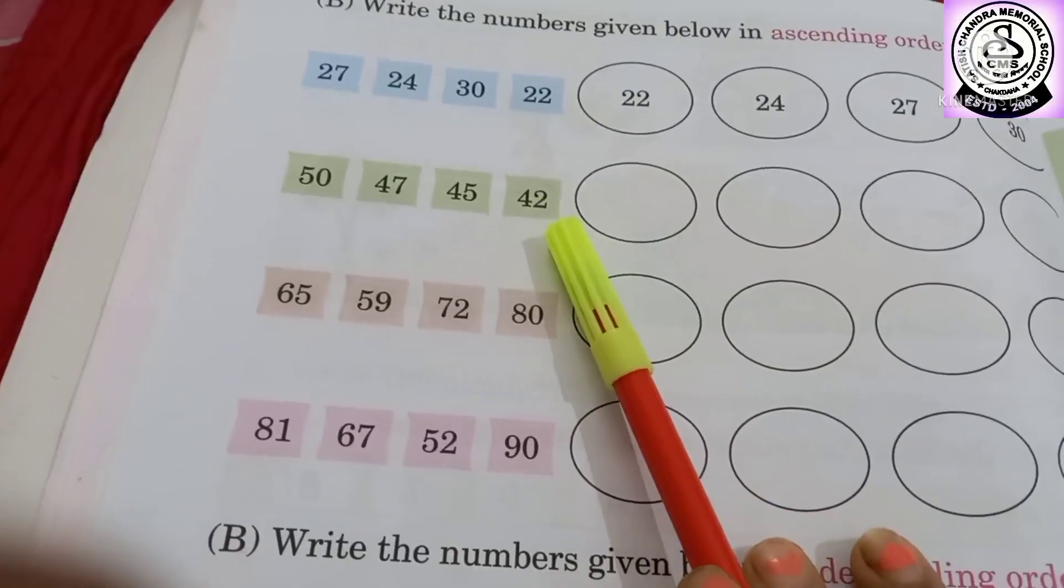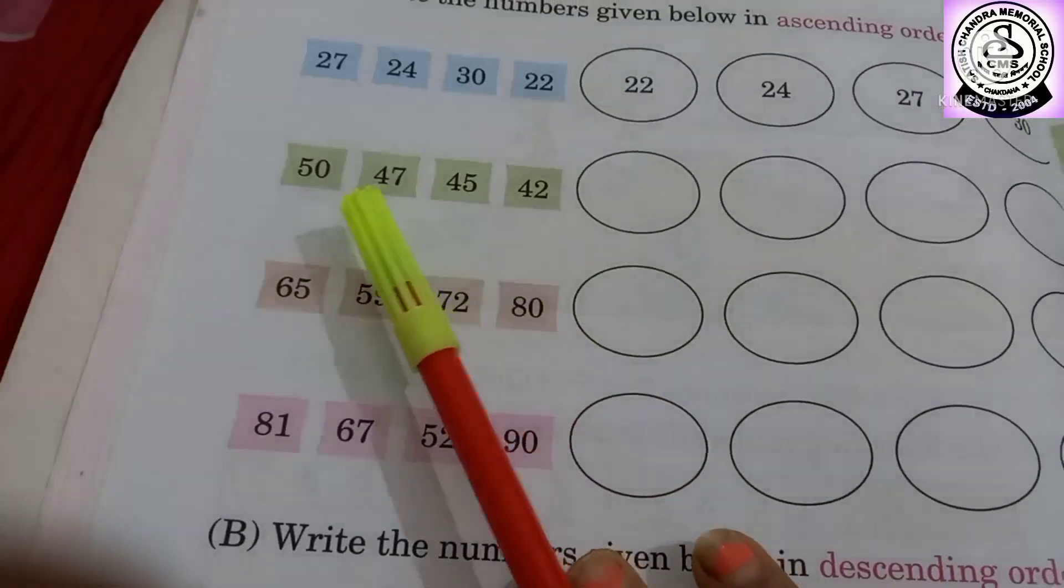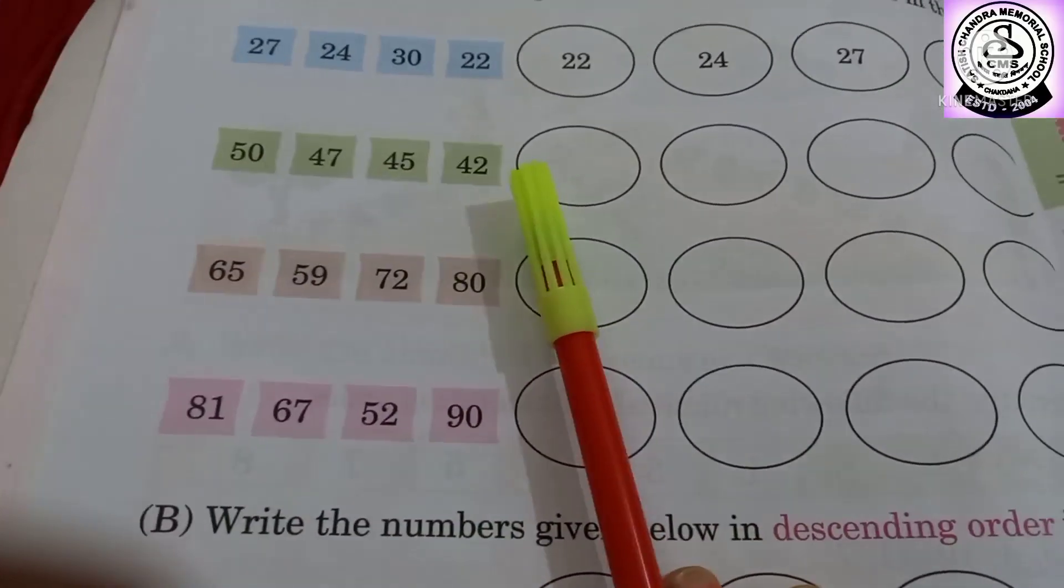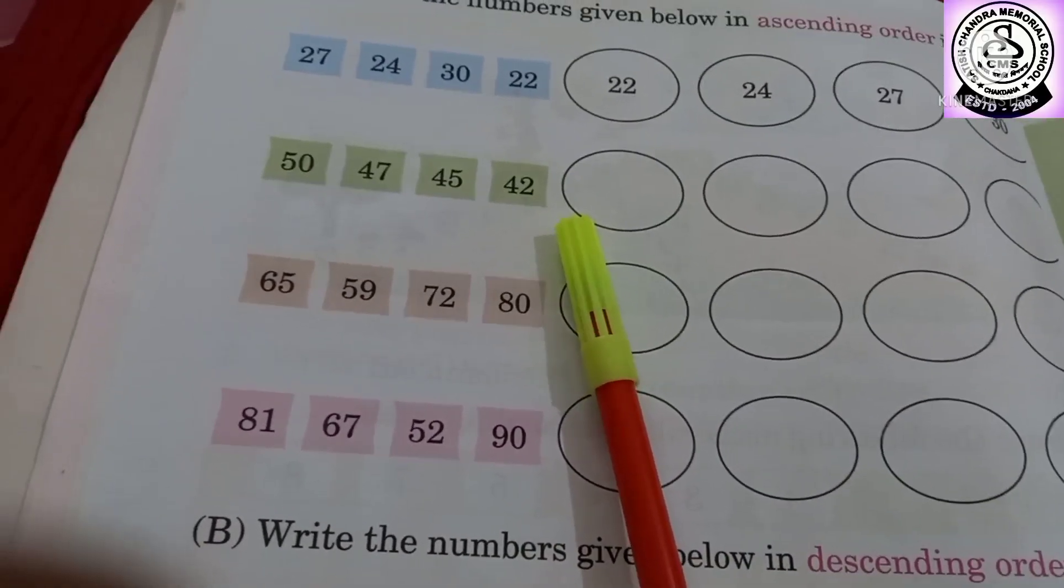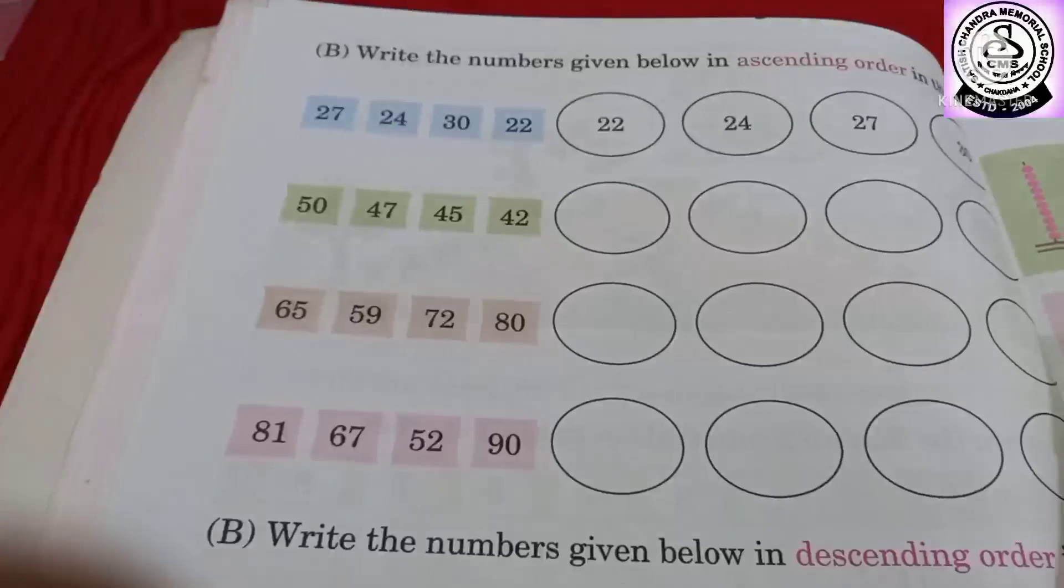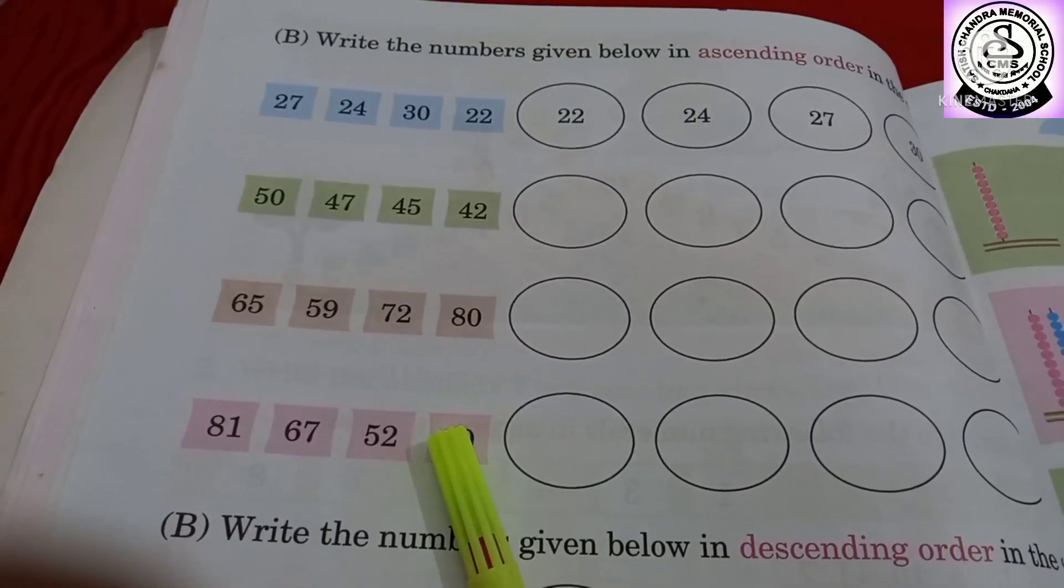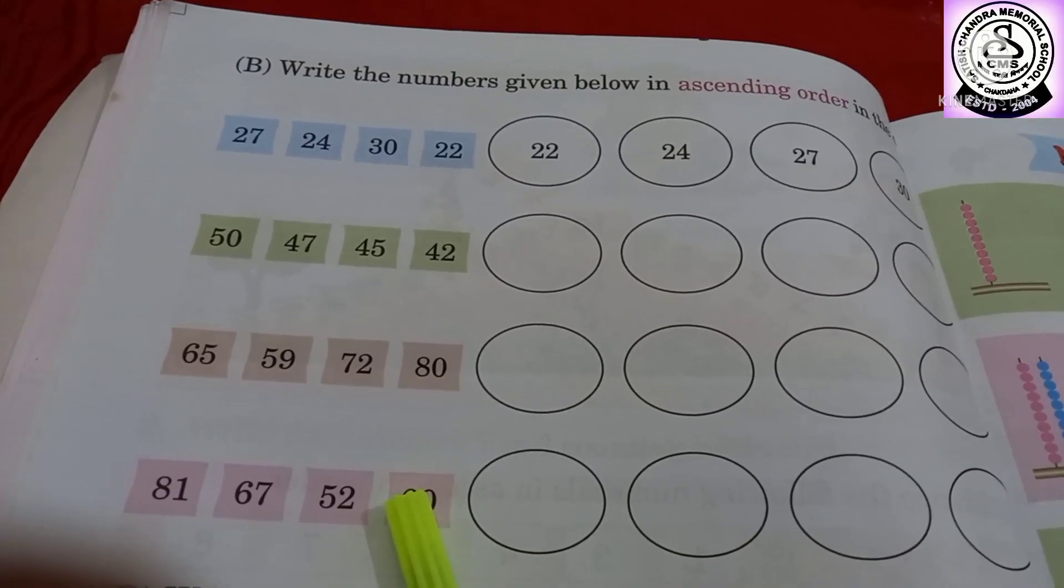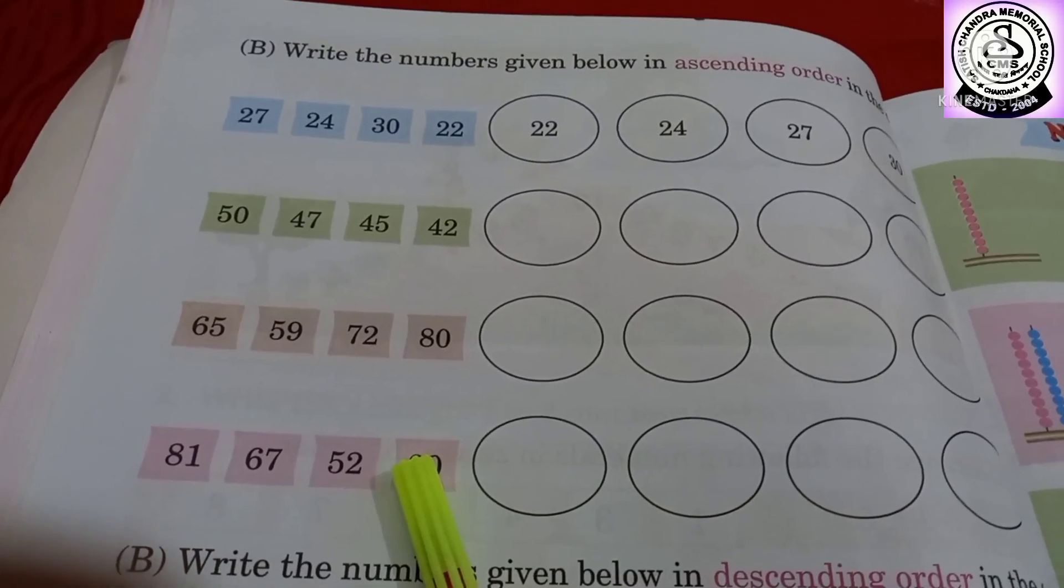So from number two you have to do 50, 47, 45 and 42. So what you have to do? You have to arrange the number from smaller to bigger because you know very well ascending order means you have to arrange the numbers from smaller to bigger.